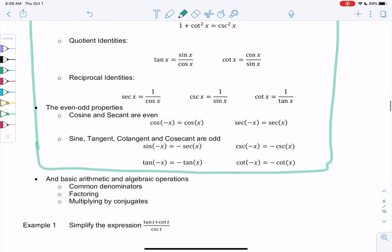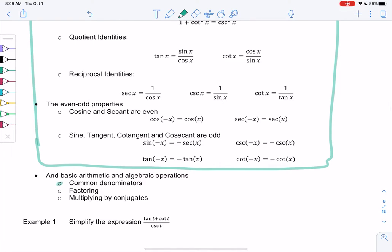Some other things we might do to simplify is maybe finding common denominators, factoring, or using conjugates. So like 3 plus i and 3 minus i are conjugates where they're the same but a different symbol. So trig functions can have conjugates as well.